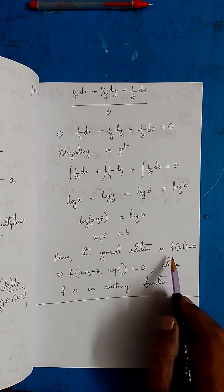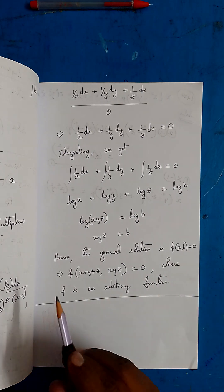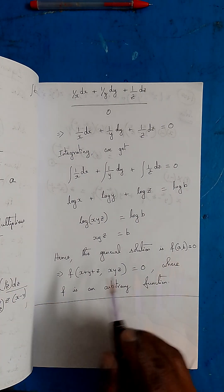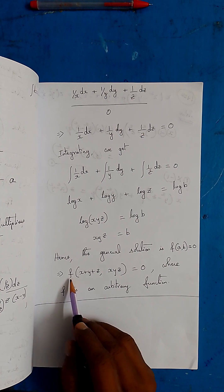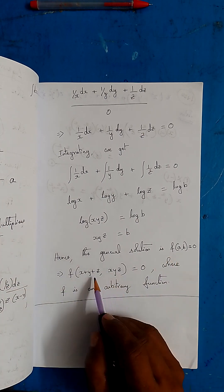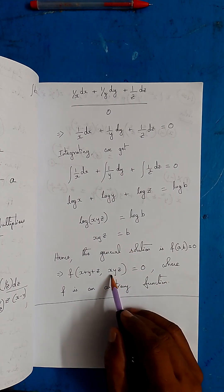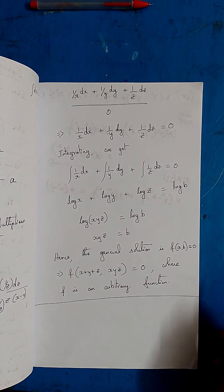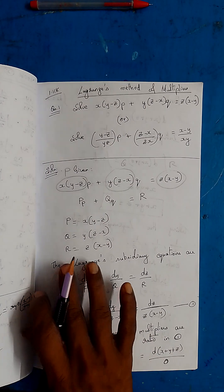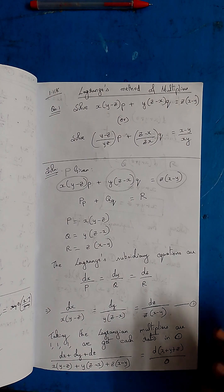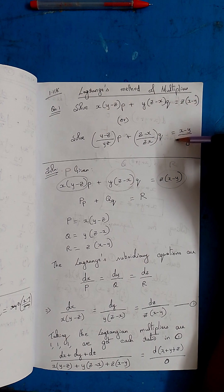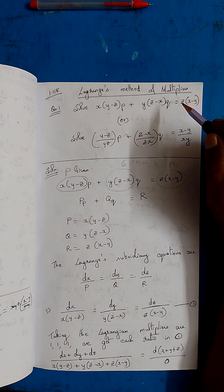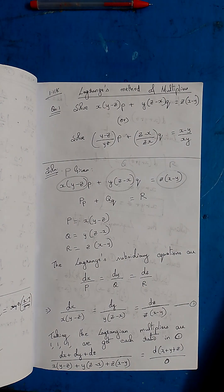Hence the general solution is f(a, b) = 0, where a = x+y+z and b = xyz. So the general solution is f(x+y+z, xyz) = 0, where f is an arbitrary function. This is an important question that can appear in two formats — be aware and solve without any difficulty. Thanks for watching.